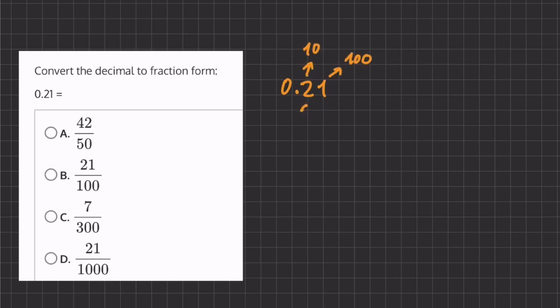If we have a 2 here, that means we have 2 out of 10 in the tenths place, and we have 1 out of 100 in the hundredths place. So we can add these 2 fractions to get our whole fraction,